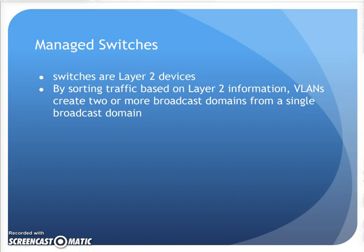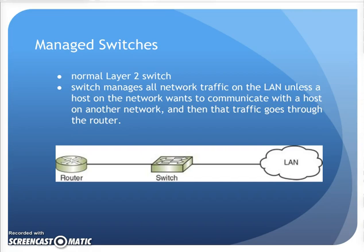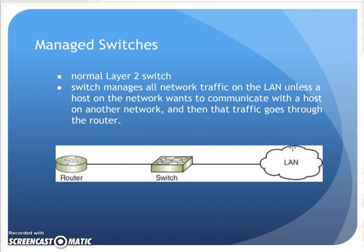Switches are layer 2. By sorting traffic based on layer 2 information, VLANs can create two or more broadcast domains from a single broadcast domain. For a normal layer 2 switch, it manages the traffic on the LAN and communicates from one host to another. If I have a workstation sending traffic, the switch knows where to send it. If it needs to get to another network, the switch passes the traffic to the router, and the router processes it and moves it on to another network. That's normal layer 2 switch operation.